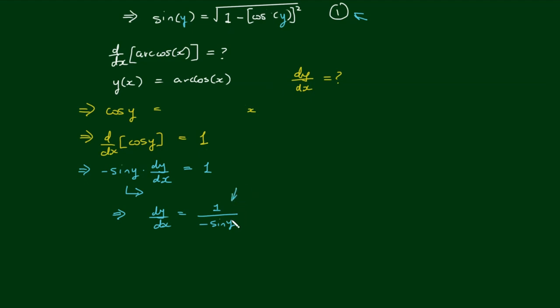So the right-hand side here is equal to 1—or negative, let's bring the negative to the front—over sin(y), which is the square root of 1 minus [cos(y)]².